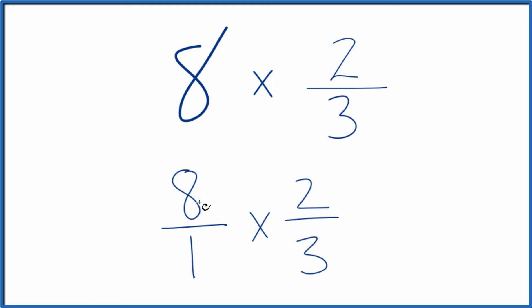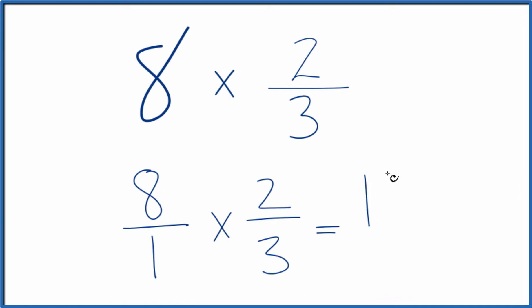So with fractions, we multiply the numerators, then the denominators. 8 times 2, that's 16. 1 times 3, that's 3.